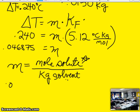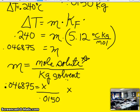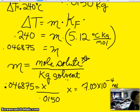So 0.046875 equals x over 0.0150. And if you cross multiply to solve for your x, you should get 7.03 times 10 to the negative 4th moles of solute.